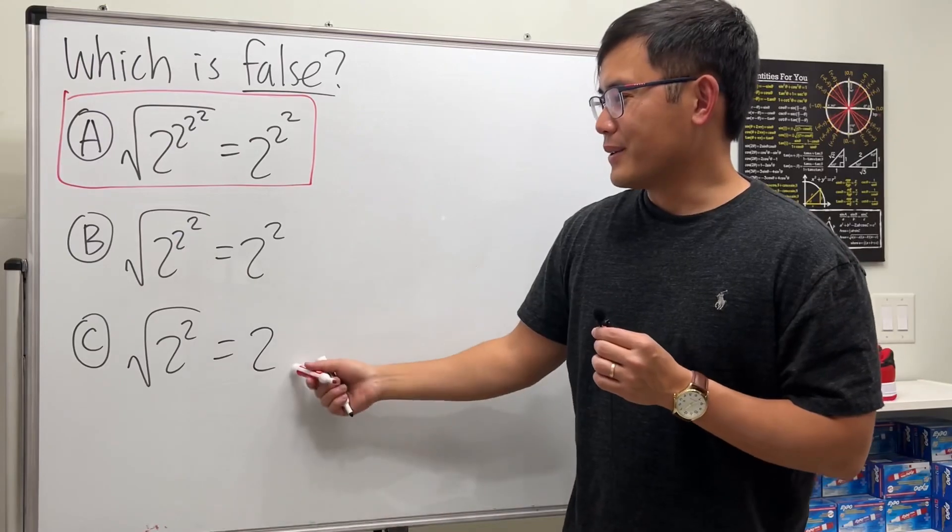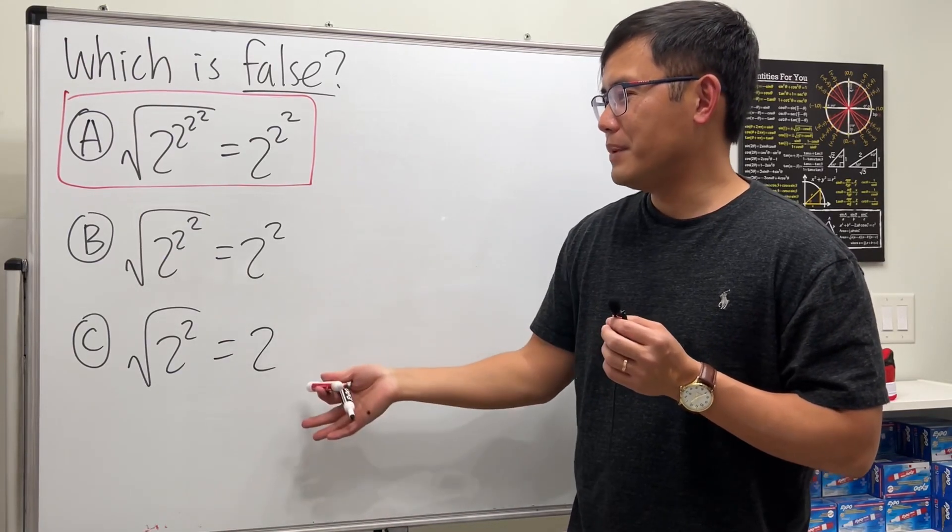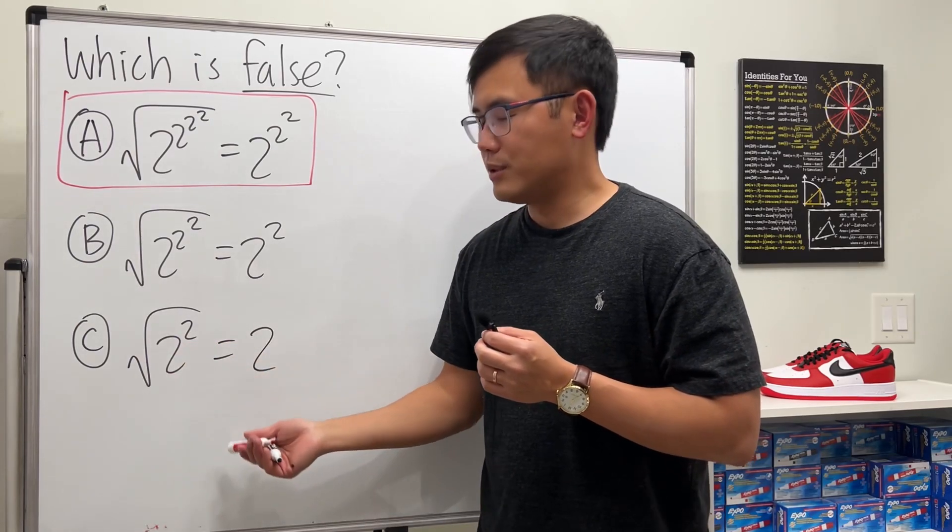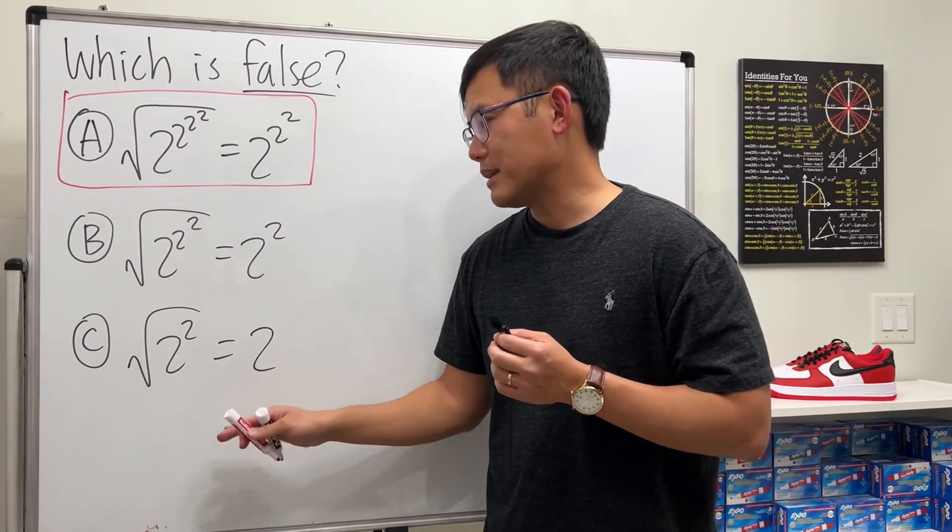Let's go over why B and C are true. Let's start with C first. This is just √4, which is just 2. There's no plus or minus, it's just 2.